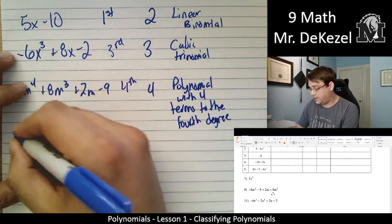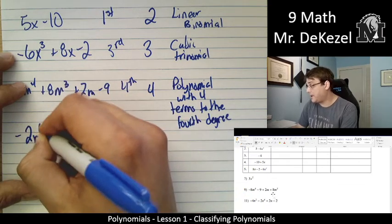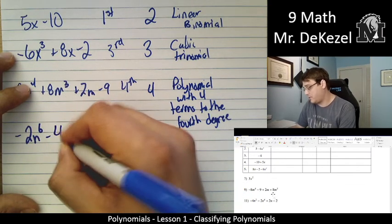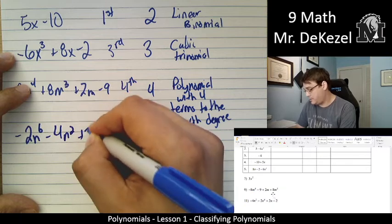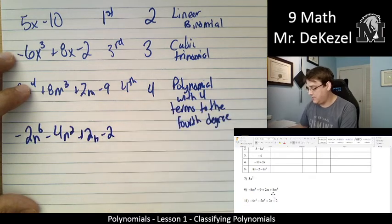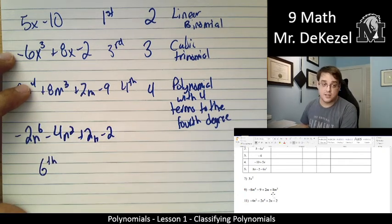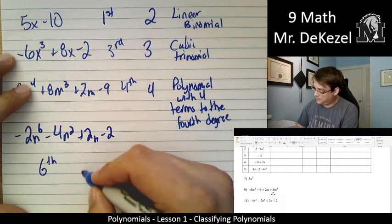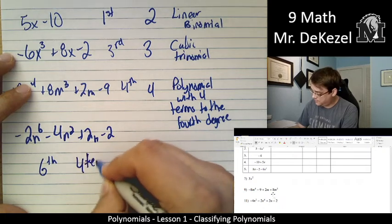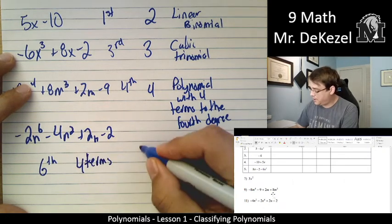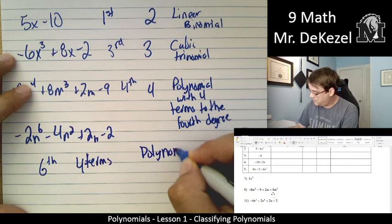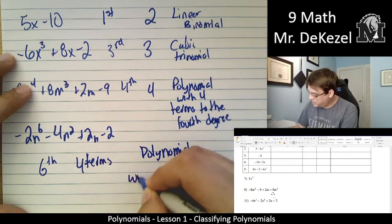Next one: -2n⁶ - 4n² + 2n - 2. That's in standard form. That is a sixth degree polynomial. And it has four terms. So, that means it is a polynomial with four terms.